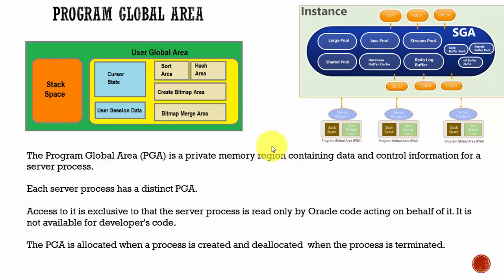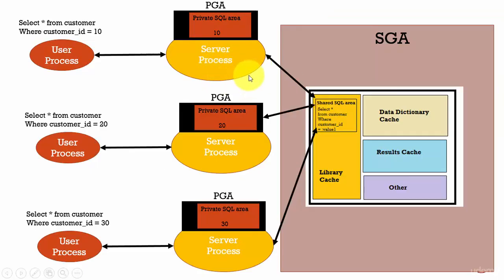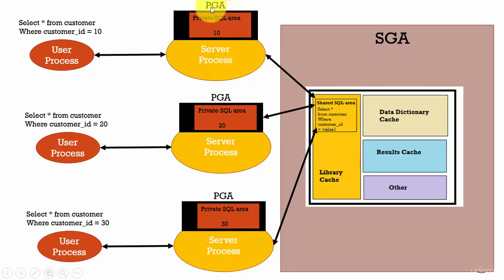Each server process has a distinct Program Global Area. In our example, we have three server processes and each server process has its own Program Global Area. We have three user processes and there are three server processes, and each server process has its own Program Global Area.